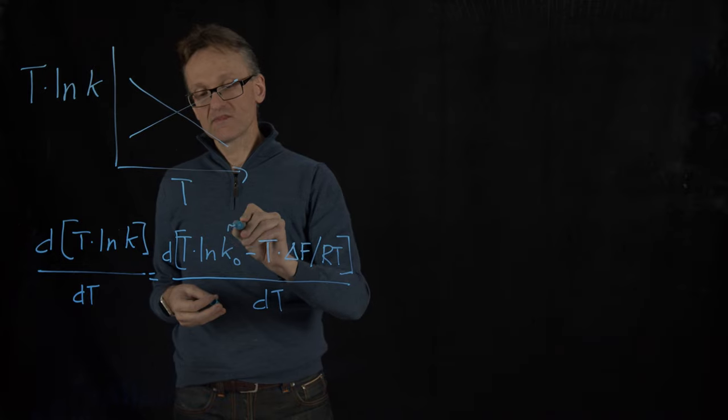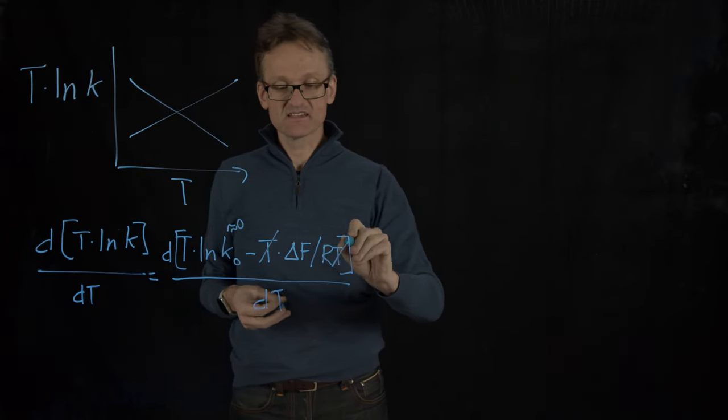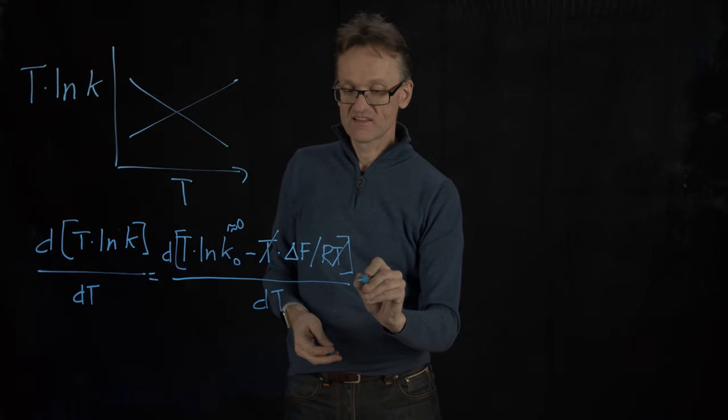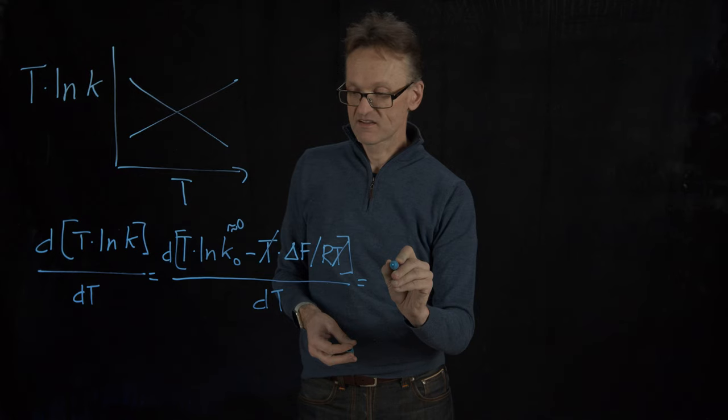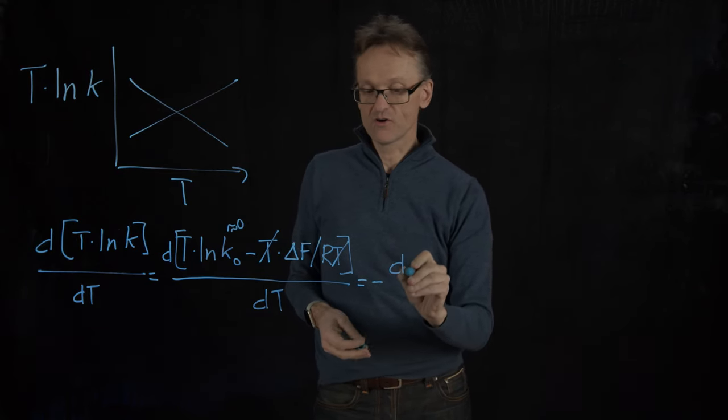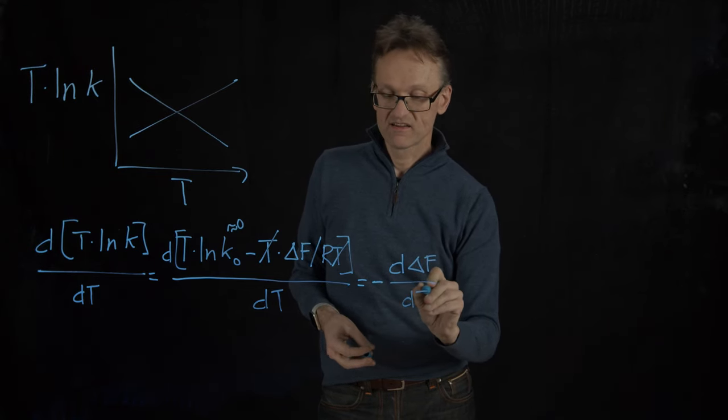As before, that derivative is going to be roughly zero. That T cancels that T. So this is going to be minus the derivative of delta F dT.